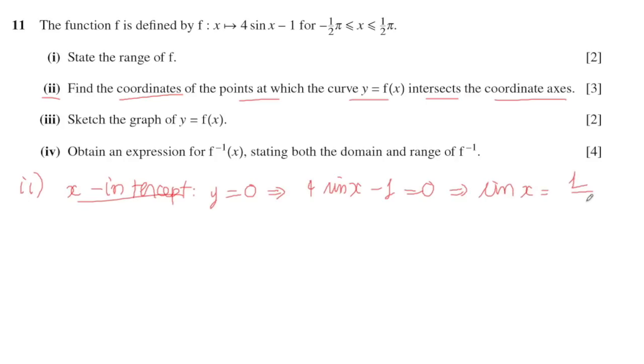When y equals 0, 4sin(x) - 1 equals 0, so sin(x) will equal 1/4. Because sine equals 1/4, I can calculate the arcsin of 1/4. So x equals arcsin(1/4), which is approximately 0.253, and this is in the interval of minus π/2 to π/2.